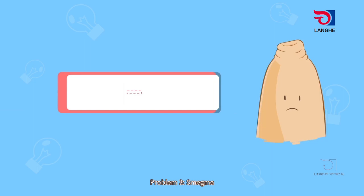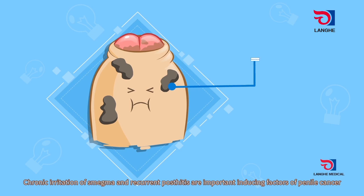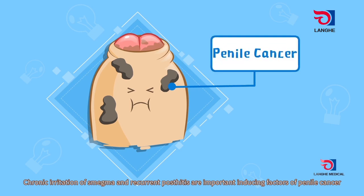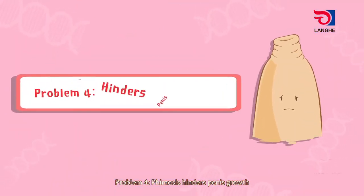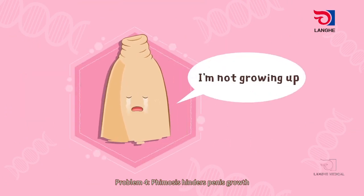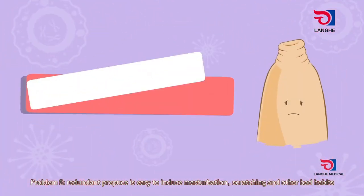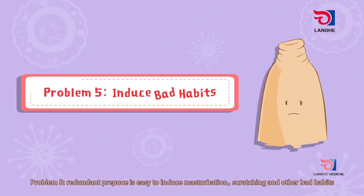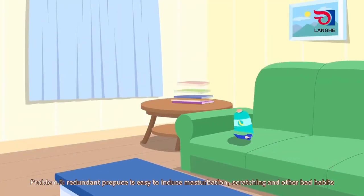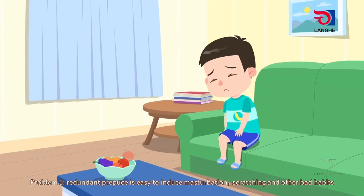Smegma accumulation and recurrent infections are important inducing factors of penile cancer. Problem four: phimosis hinders penis growth. Problem five: redundant prepuce is easy to induce masturbation, scratching, and other bad habits.